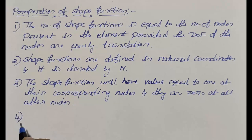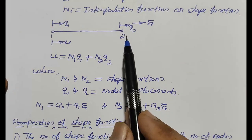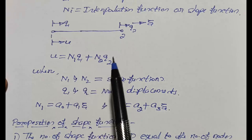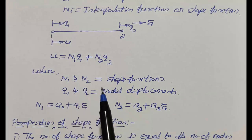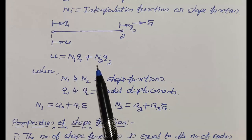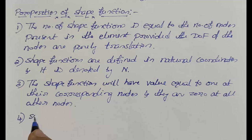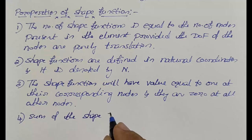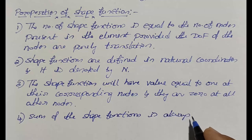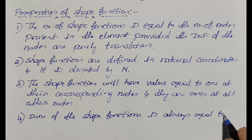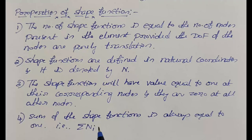Fourth property: the sum of the shape functions is always equal to 1. For the 1D bar element, N1 + N2 = 1, or in general, Σ Ni = 1.